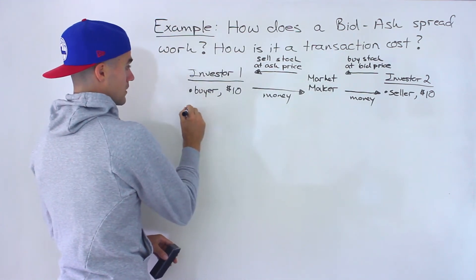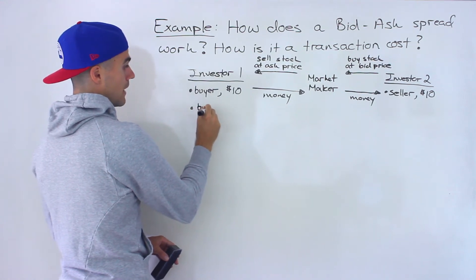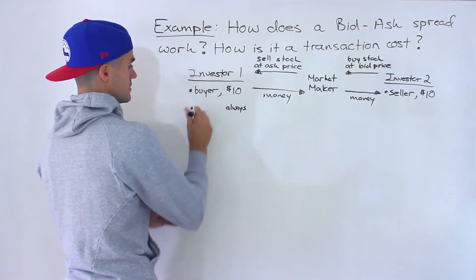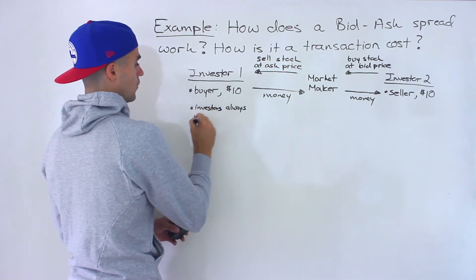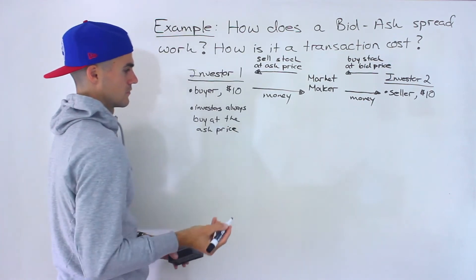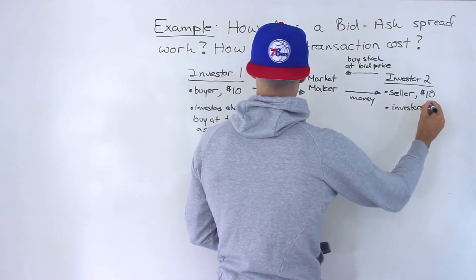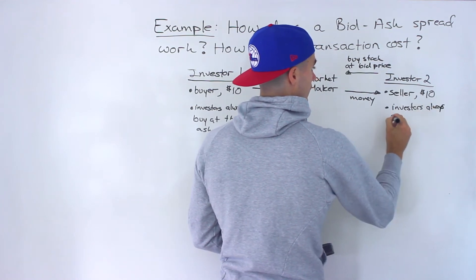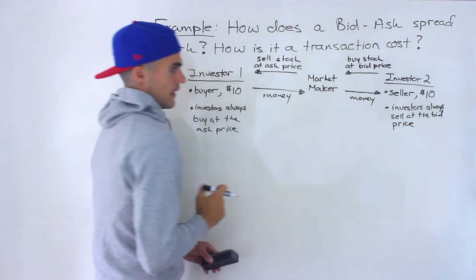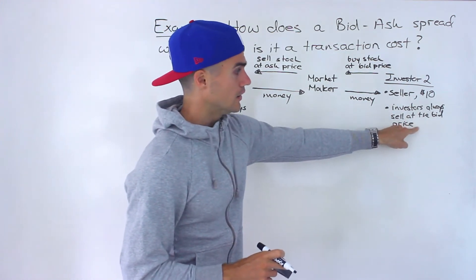Before we get into how those prices relate to the $10 — investors always buy at the ask price. And on the selling side, if an investor is holding a stock and wants to sell it, investors always sell at the bid price. So if you have a trading account and you want to buy a stock, you'll always buy it at the ask price; if you want to sell it, you'll sell it at the bid price.